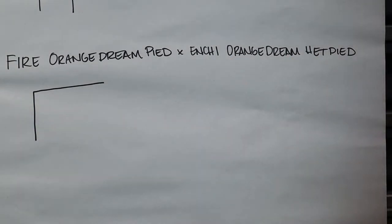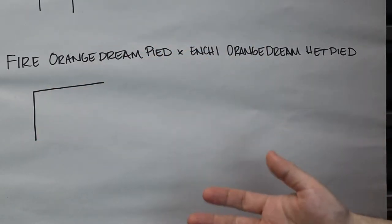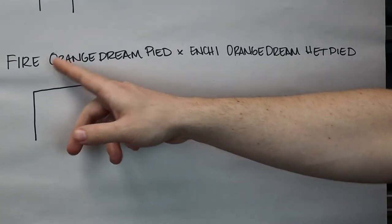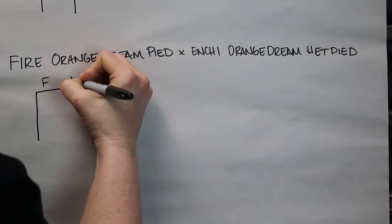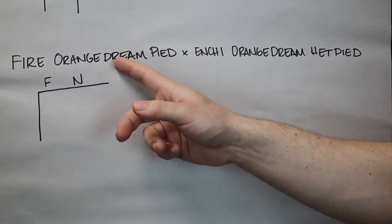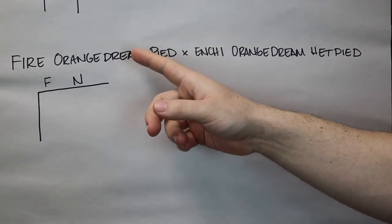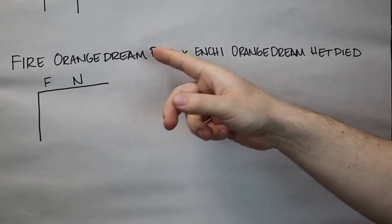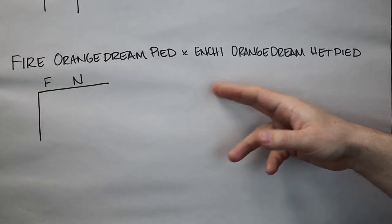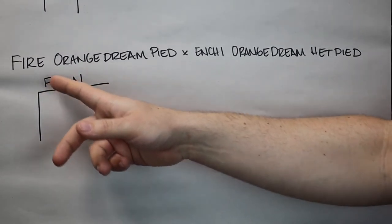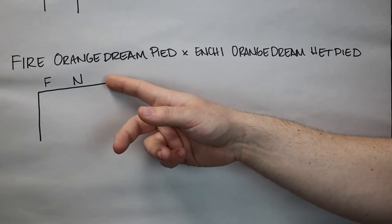Fire is a codom. If you breed it to a normal, you have two options: either get a fire or you get a normal. So we put 'F' or an 'N' — make space between those because we're going to have lots of letters. Same thing: orange dream. When you breed it to a normal, you either get an orange dream or a normal. Now we have multiple options of animals, so we can't just add orange dream to fire and not to normal, because that wouldn't be right.